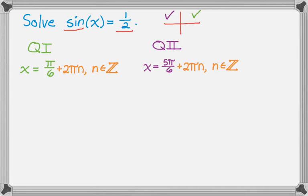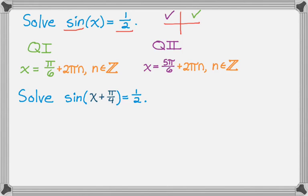Now let's make it a little more complicated. We're going to solve sine of (x + pi/4) equals 1/2. Again, you see sine and positive 1/2, so you know you're in quadrants 1 and 2.